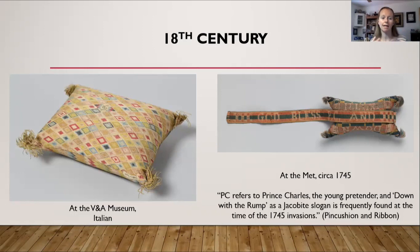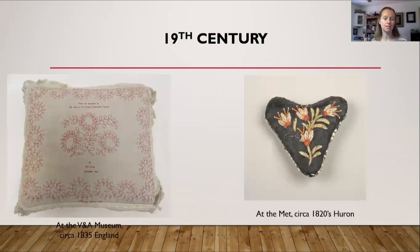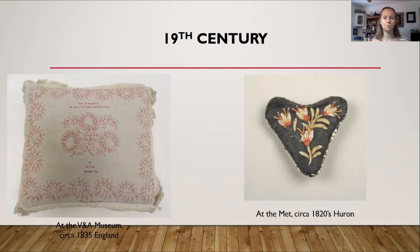Into the 18th century: on the left is an Italian pin cushion from the V&A Museum featuring little tassels on its four corners. On the right is a pin pillow from 1745 at the Met. Notably, the left one has no cord and would have sat on a table, while the right one has a cord for wearing. Into the 19th century: on the left is an English pin cushion from 1835 at the V&A, and on the right is a Met pin cushion from about 1820. By this point, women were placing pin cushions on tables or above fireplaces rather than wearing them as in the 17th century.